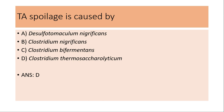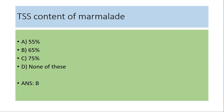TA spoilage is caused by — (a) Desulfotomaculum nigrificans, (b) Clostridium nigrificans, (c) Clostridium bifermentans, (d) Clostridium thermosaccharolyticum. The answer is (d) Clostridium thermosaccharolyticum. TSS content of marmalade: (a) 55%, (b) 65%, (c) 75%, (d) none of these. The answer is (b) 65%.